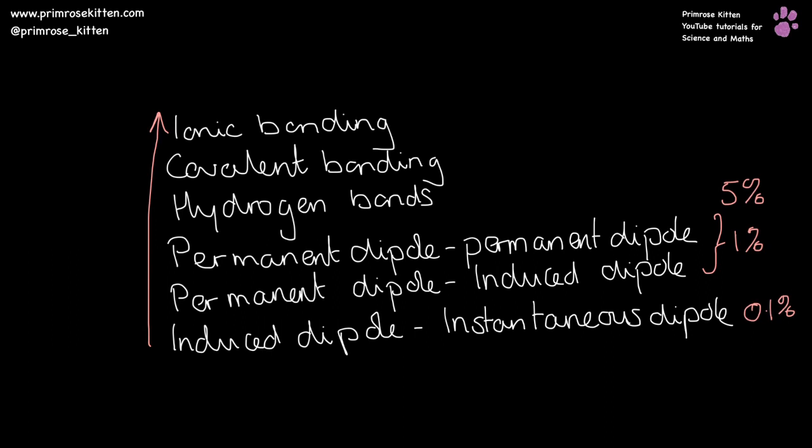Lots of different subjects and textbooks call these forces different names. These are the names I like because they accurately describe what is going on. The last three—permanent dipole-permanent dipole, permanent dipole-induced dipole, and induced dipole-instantaneous dipole—are also known as van der Waals forces. The one at the bottom, induced dipole-instantaneous dipole, is also known as a London dispersion force.